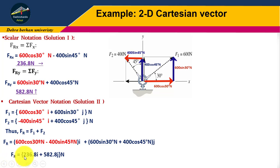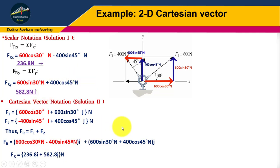The difference between Solution 1 and Solution 2 is that Solution 2 is expressed in i and j, which is the Cartesian vector notation. Solution 1 gives x and y magnitudes, which is the scalar notation.